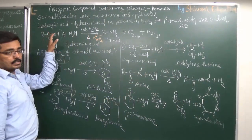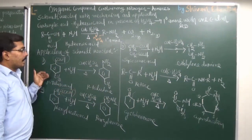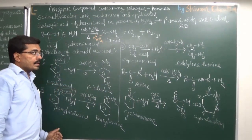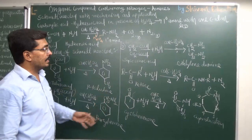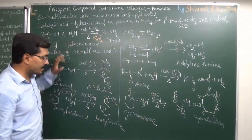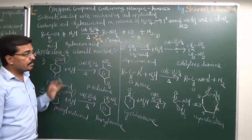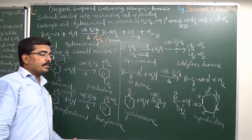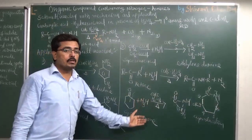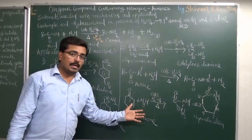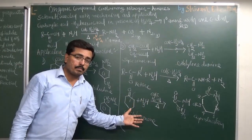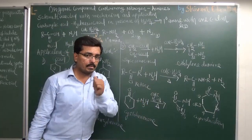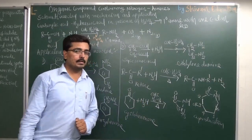In today's lecture we have studied how carboxylic acid can be converted into primary amine — this reaction is known as the Schmidt reaction. In the Schmidt reaction, carboxylic acid is converted into a primary amine having one carbon atom less, through a specific mechanism involving isocyanate. Based on these applications, students can write different products. Please like, share, and subscribe to the channel.